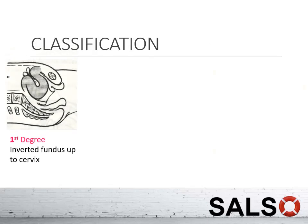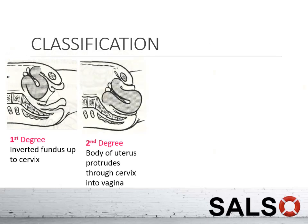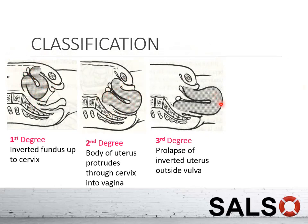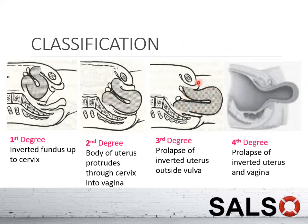For early assessment, you need to know the classification of uterine inversion, which has four degrees. First degree: the uterine fundus is inverted, a dimpling is visible over the fundus area, but it does not pass beyond the cervix. Second degree: the body of the uterus has passed through the cervix. Third degree: the inverted uterus prolapses outside the vulva with a fleshy mass visible. Fourth degree: even the vagina prolapses outside.